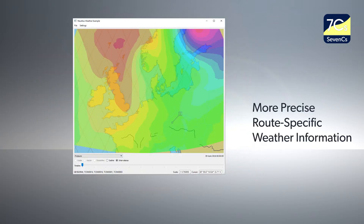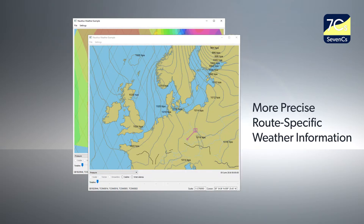Route-specific weather information is more precise due to GRIB1 and GRIB2 data imports, and the vectorization of gridded data, like ISO lines, streamlines, and interval areas.